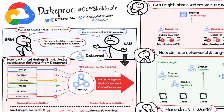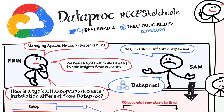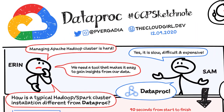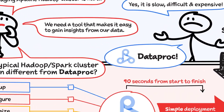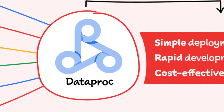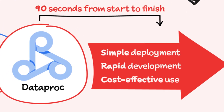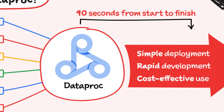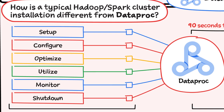Erin and Sam are part of a growing data science team using the Apache Hadoop ecosystem and are dealing with operational efficiencies. So they are looking at Dataproc, which installs a Hadoop cluster in 90 seconds, making it simple, fast, and cost-effective to gain insights as compared to traditional cluster management activities.